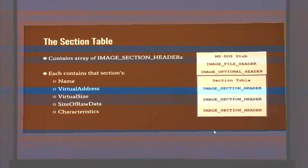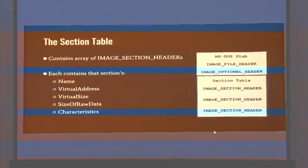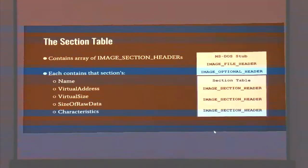After this is the section table. A section corresponds to a continuous area of memory, and there will be sections for code, data, imports, resources, etc. Each section will have a name — often things like .idata for imports or .rsrc for resources. It's useful for a malware analyst when you see a section name that doesn't follow a normal pattern. It's common for packed malware — you'll see upx0 and upx1 if it's packed by UPX, one of the most common packers. File infectors like .rmnet are named after their section names.